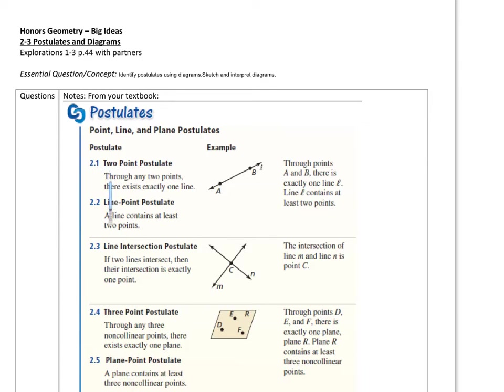So the first one is the two-point postulate. It says through any two points, there exists exactly one line. So what we're saying here is that you need to have two points, and as long as you have two points, you can make a line. Through any two points, there exists exactly one line.